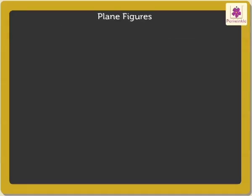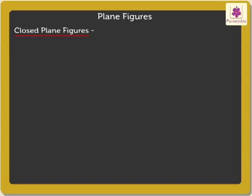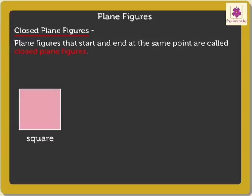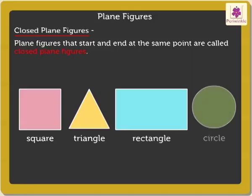Now, let's look at closed plane figures. Plane figures that start and end at the same point are called closed plane figures. Some closed plane figures are square, triangle, rectangle and circle.